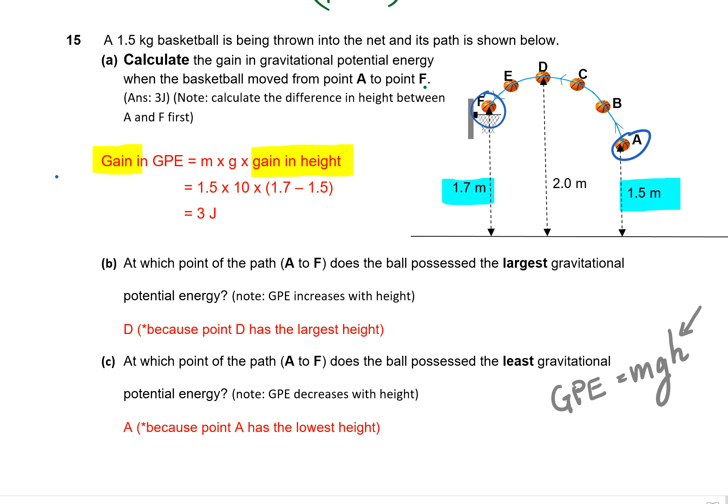At which point of the path does the ball possess the largest GPE? Remember the formula MGH. As the ball is moving, the mass will not change. G remains the same as long as you're on Earth. So the highest GPE will be the point where it is furthest away from the ground, the highest point. In this case, you can see that the highest point is actually 2 meters. So that's D. And which point does it have the least GPE? I will look for the point which is closest to the ground. In this case, it will be point A.